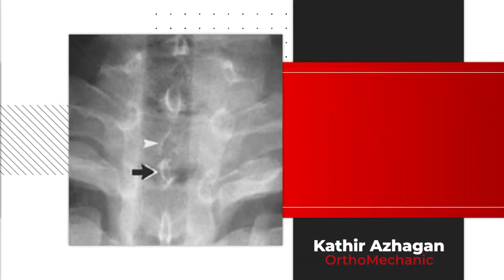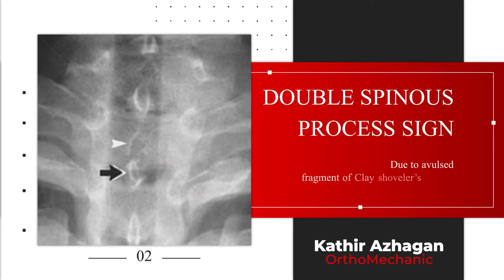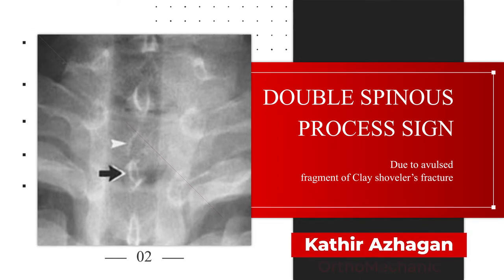Double spinous process sign is seen with clay-shoveler's avulsion fracture, owing to the caudal displacement of the avulsed fragment.